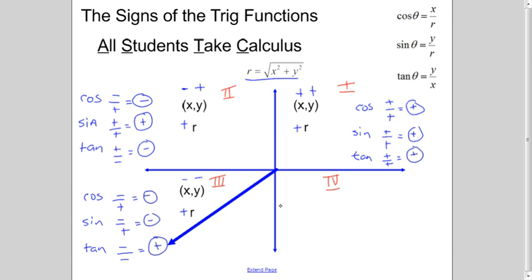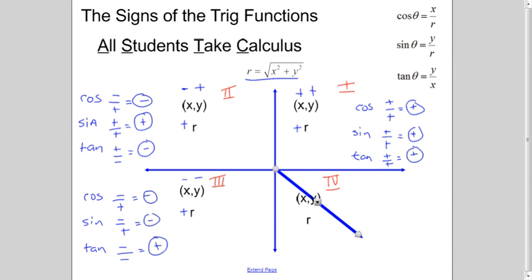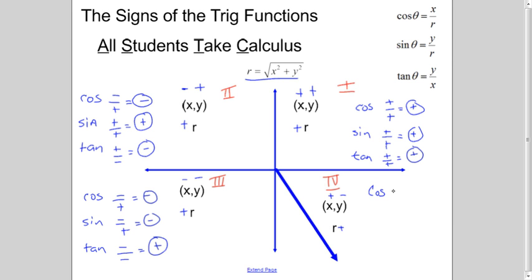Two of the values are negative and one is positive in quadrant three. In quadrant four, for any angle between 270 and 360 degrees, x is positive, y is negative, and r is always positive. Therefore cosine — x over r — is positive over positive, which is positive. Sine — y over r — is negative over positive, which is negative. And tangent — y over x — is negative over positive, which is negative.